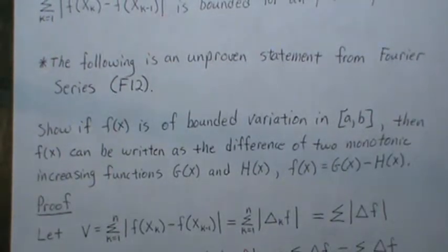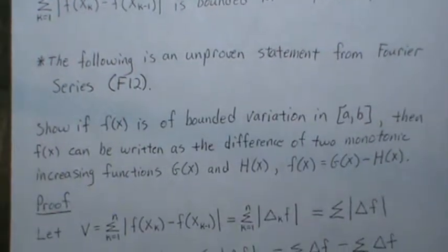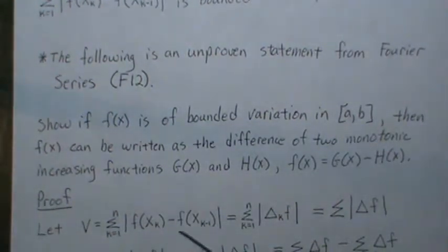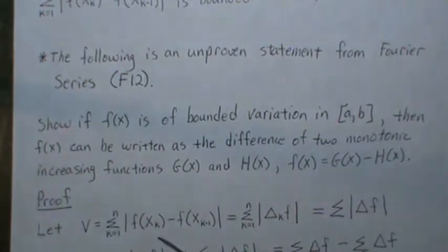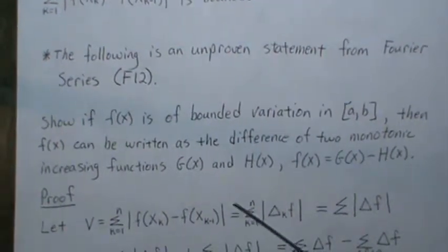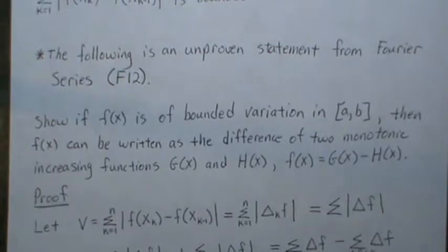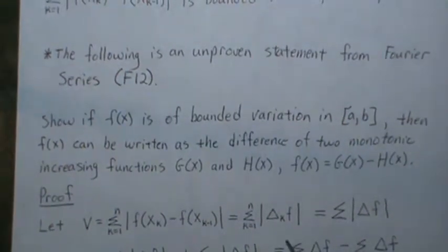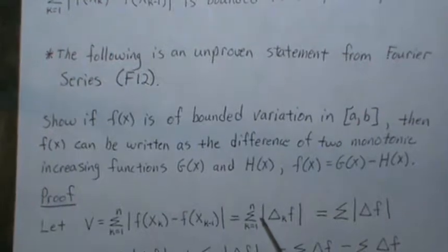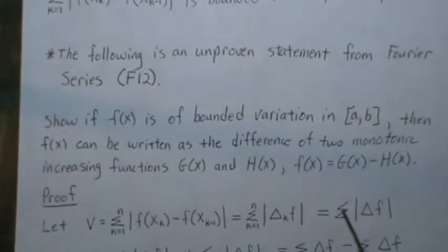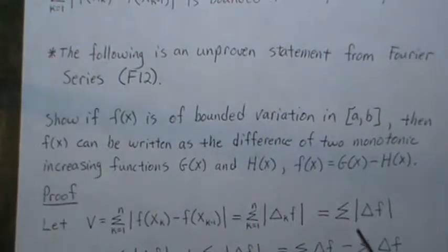This is a video you may have to pause and write some of it out or rewind. Let v be this sum here — for a particular partition going from 1 to n. If the absolute value signs weren't here it would be a telescoping sum, but with absolute value it's not. So we're going to rewrite this using the notation delta-k of x, and further simplify to just sigma of delta-f, leaving off the k index.